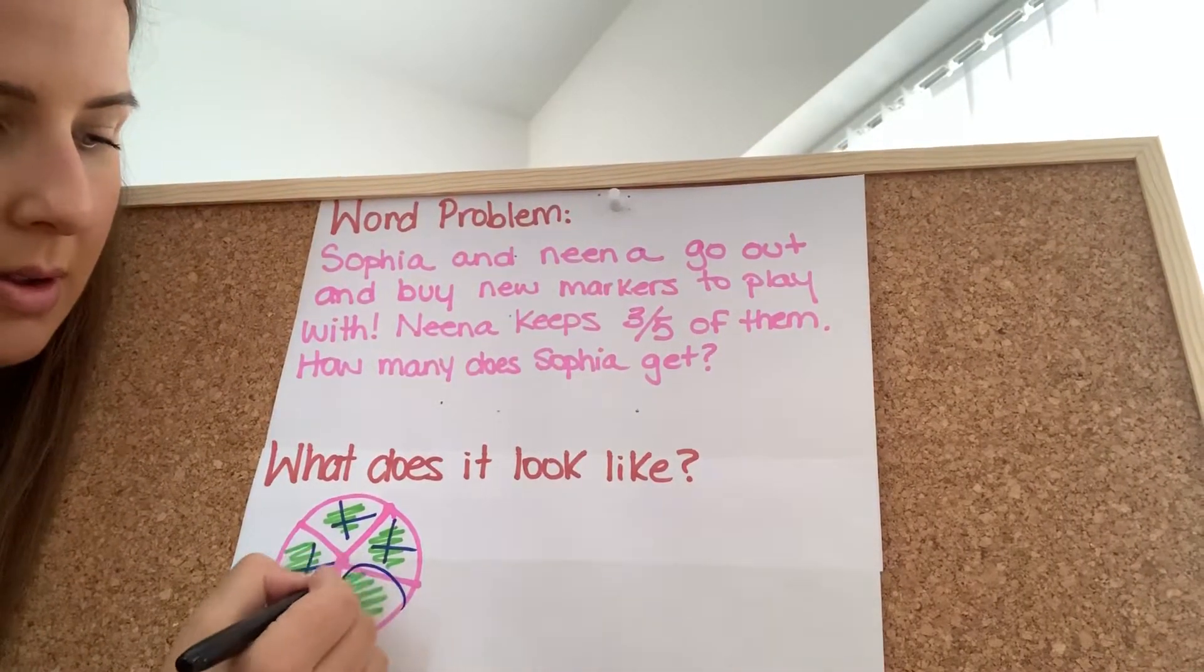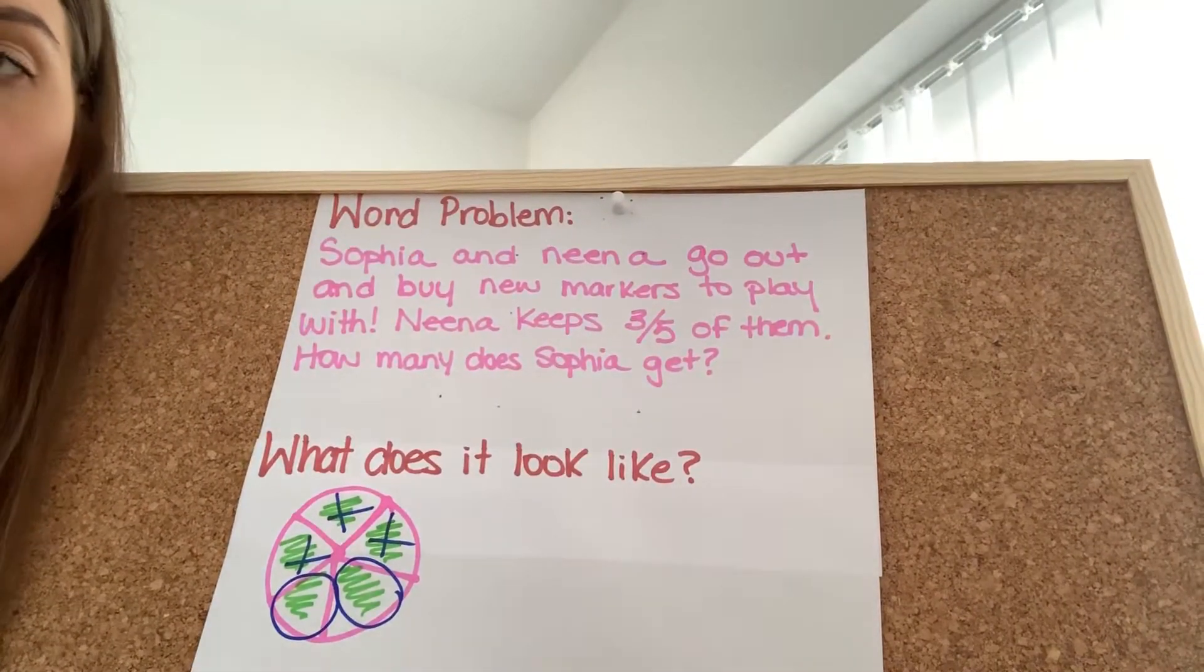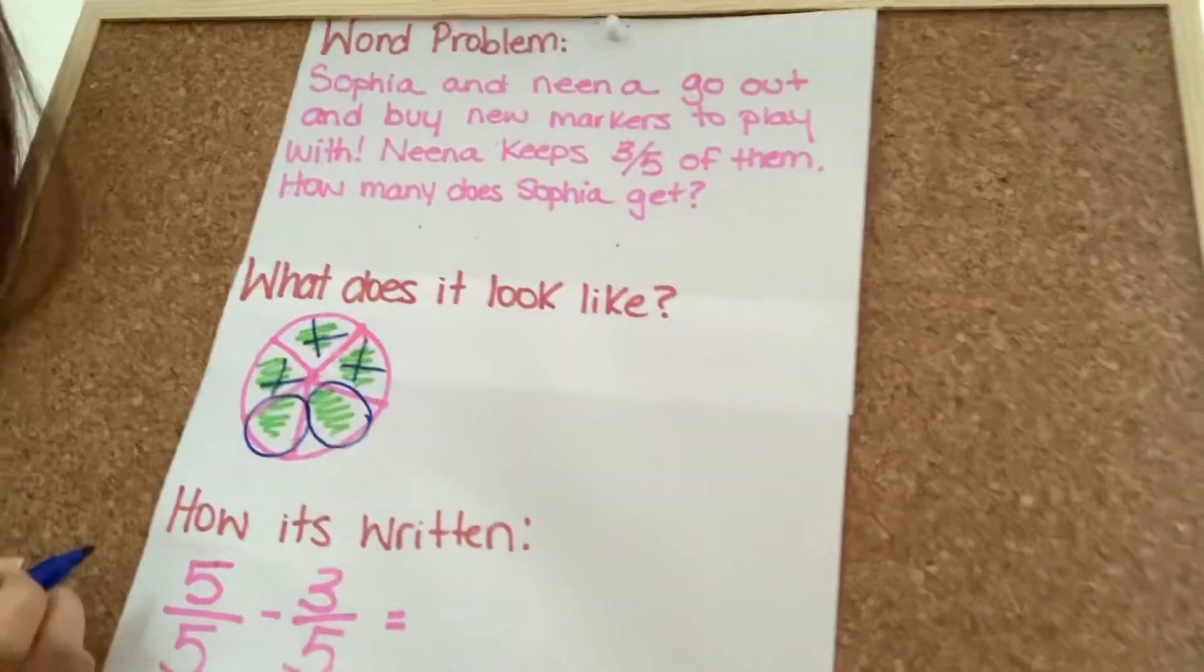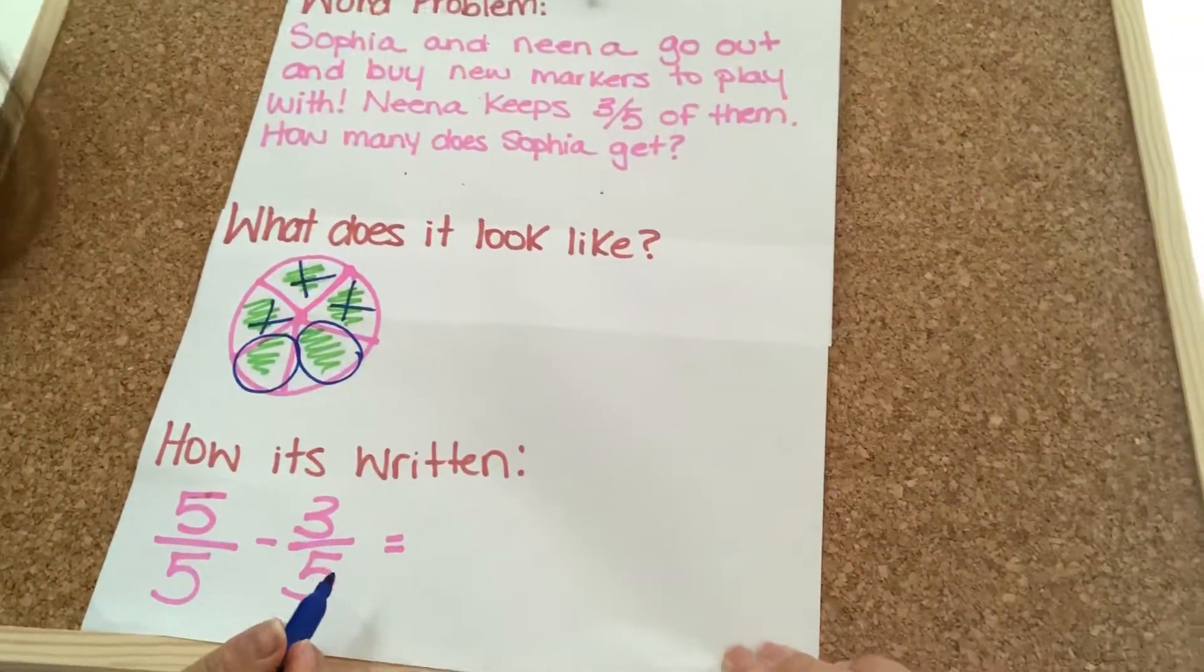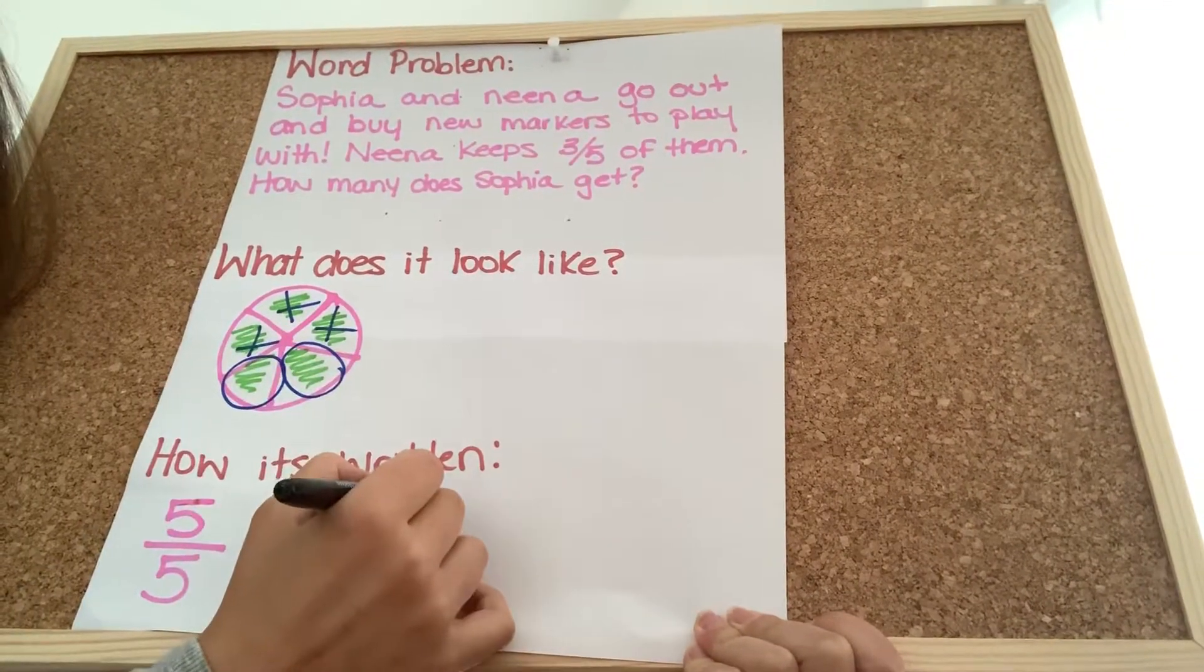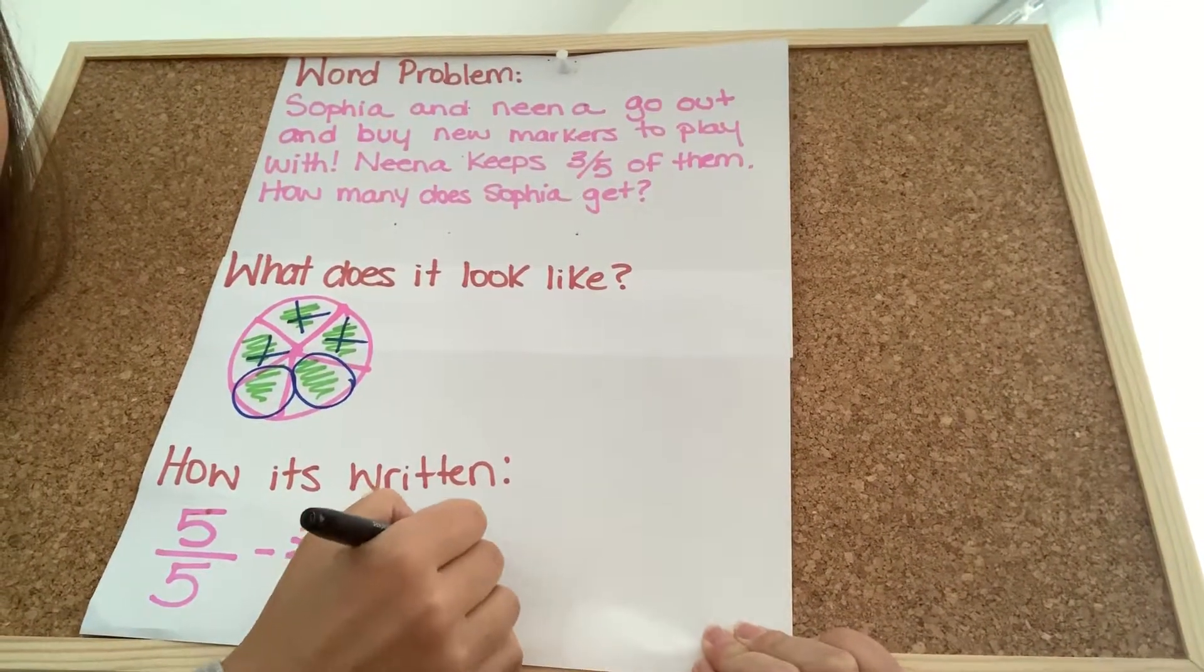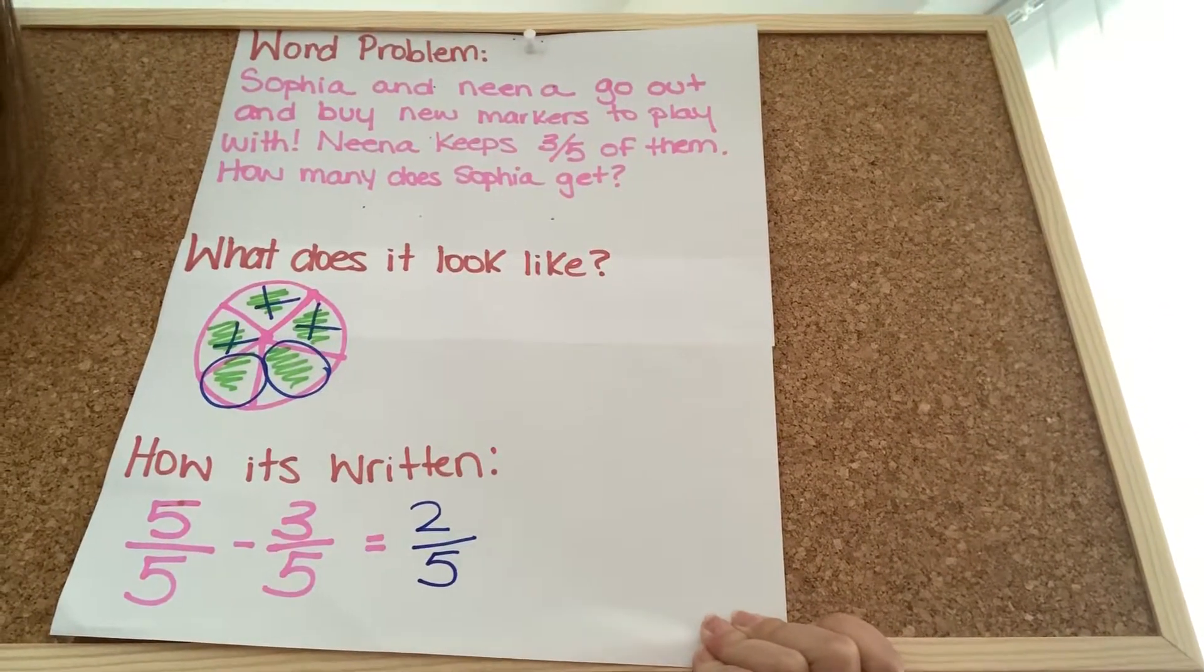How many does that leave us with? Two-fifths, okay? So, five over five minus three over five is going to leave us with two over five.